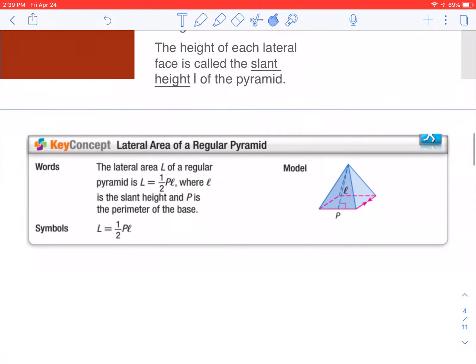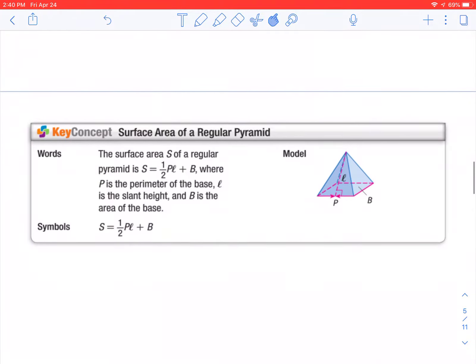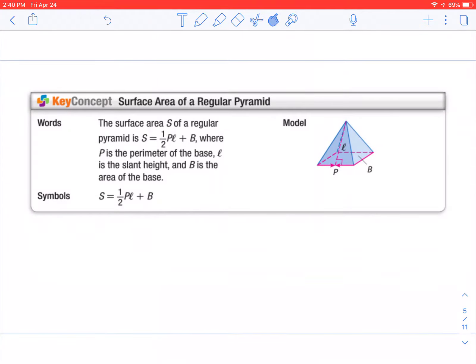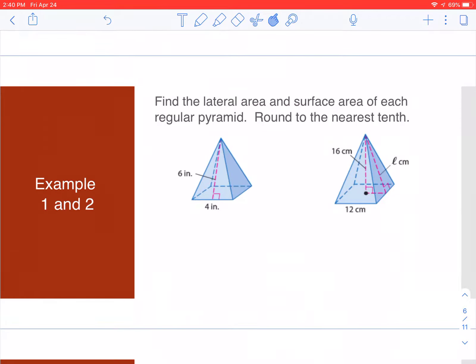Lateral area for a pyramid is one-half the perimeter times the slant height. We're finding the perimeter of that square, then the slant height, multiply it out and find your answer. To find surface area, we add the area of the base. The biggest challenge is finding the slant height.